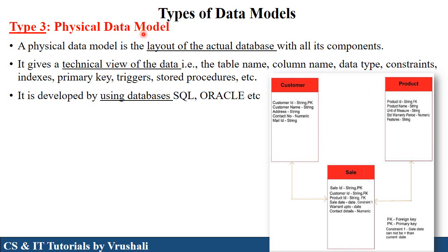The last type is the physical data model, which represents an actual database layout. It can be developed by a database administrator or database developers, showing the complete technical view of data — which type of tables are stored in the database, which type of columns, their data types, their constraints, primary keys, triggers, and stored procedures. For example, customer sells a product: customer has customer ID and name — ID is string type, name is string type, address is string type, contact number is numeric or integer type. It shows the data types of each and every attribute and column. It gives more detailed information of the actual database, which is developed using different databases like SQL, Oracle, etc.